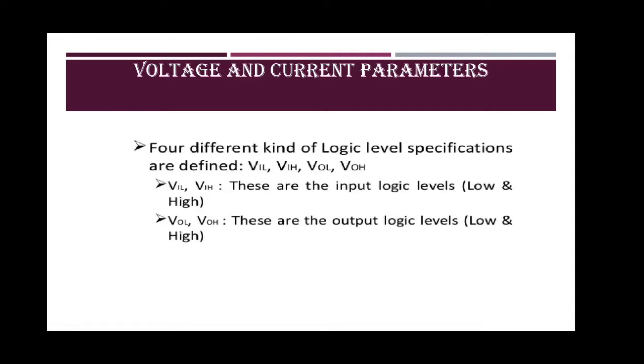Then IIH is the current flowing into an input when a specified high level is applied to that input. IIL is current flowing into an input when a specified low level is applied to an input.